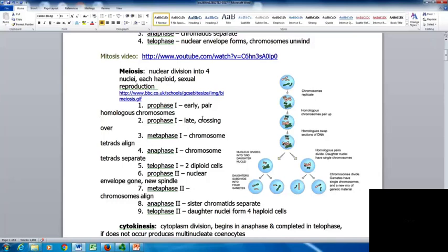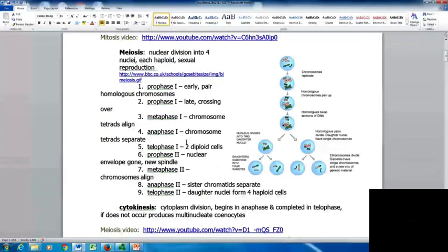In prophase I, you do early pairing of homologous chromosomes. Later in prophase I, you have crossing over where genetic information switches which chromosome it's on. Metaphase I, chromosome tetrads align along the metaphase plate. In anaphase I, chromosome tetrads separate. In telophase I, you end up with two diploid cells.